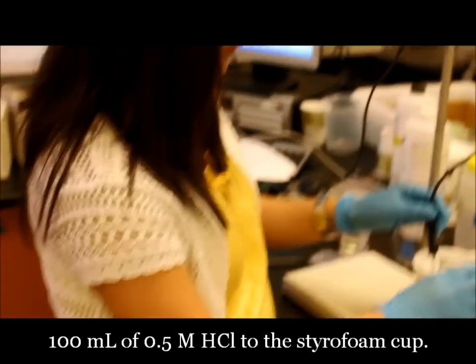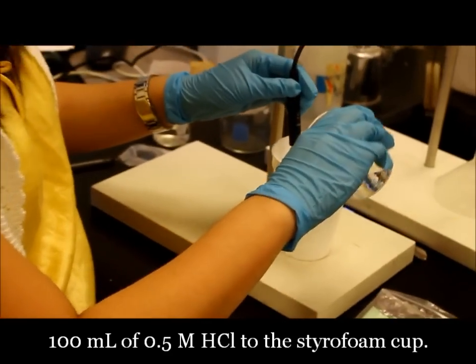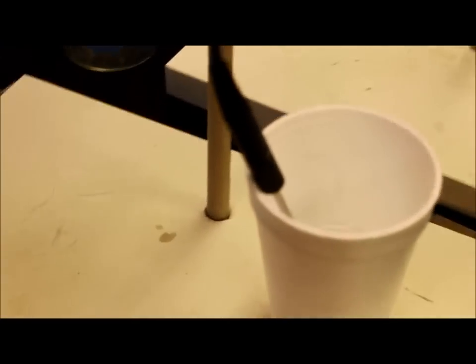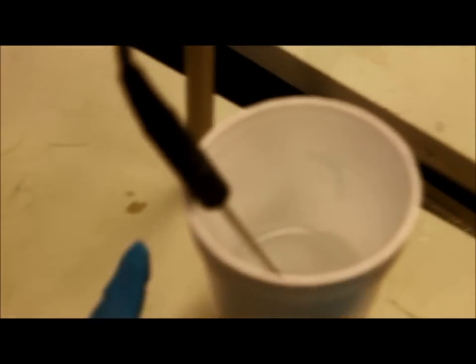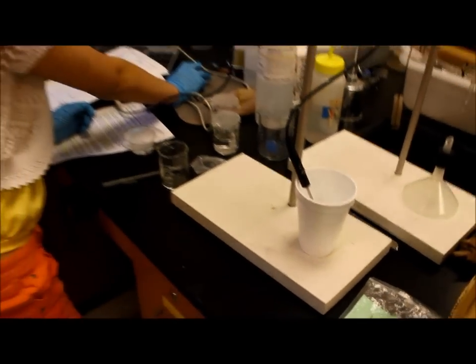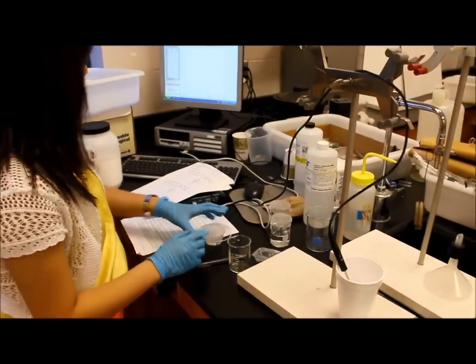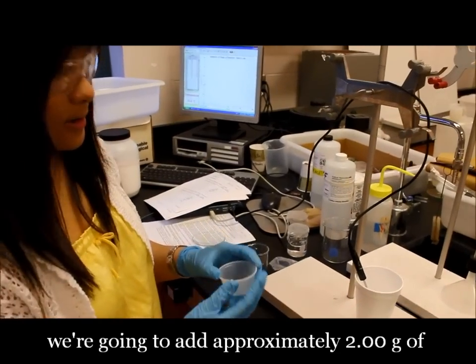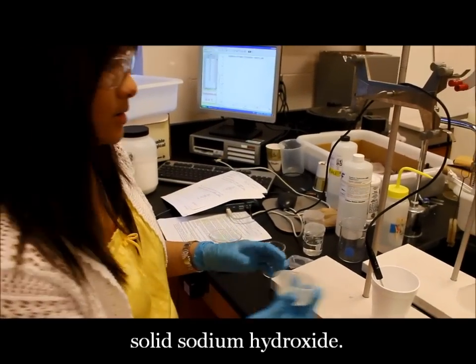So for the second reaction, we're going to add 100 milliliters of 0.5 molar hydrochloric acid into the styrofoam cup. Then we're going to collect the initial temperature, and we're going to add possibly 2 grams of solid sodium hydroxide.